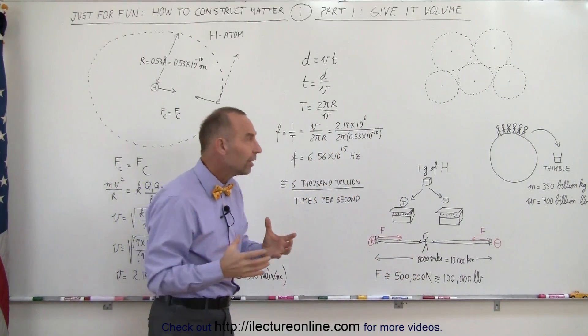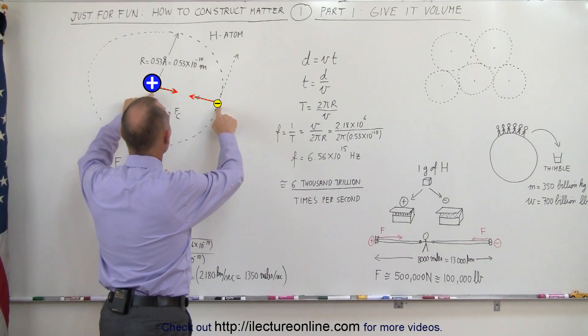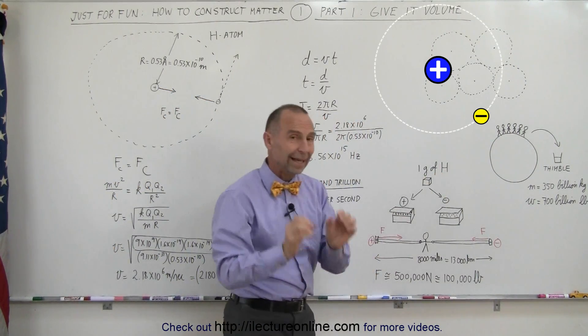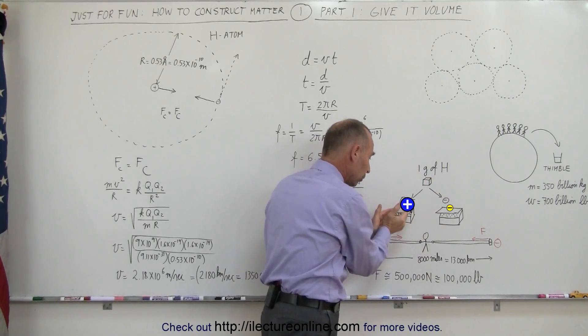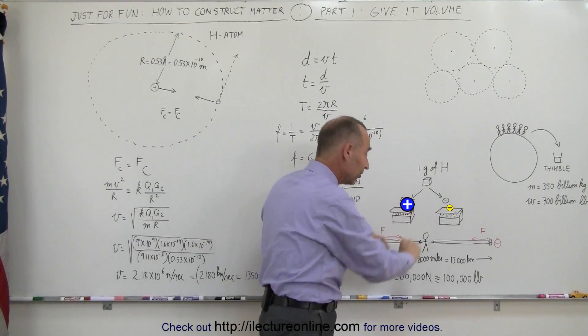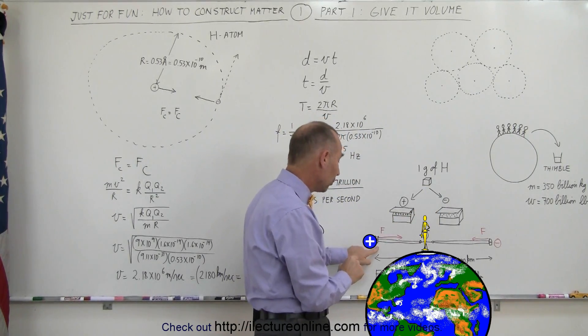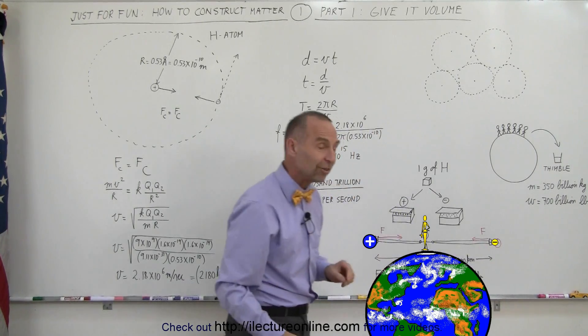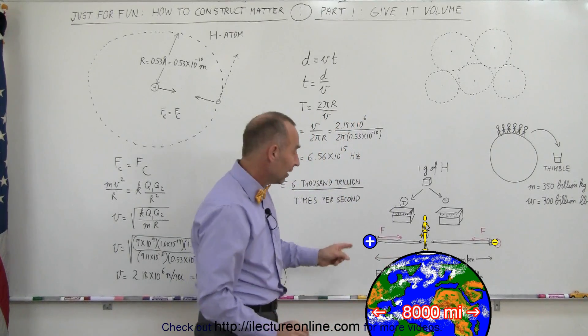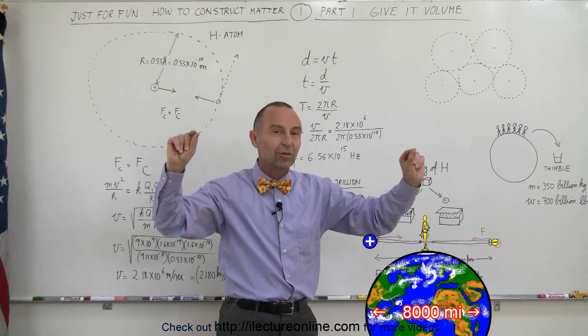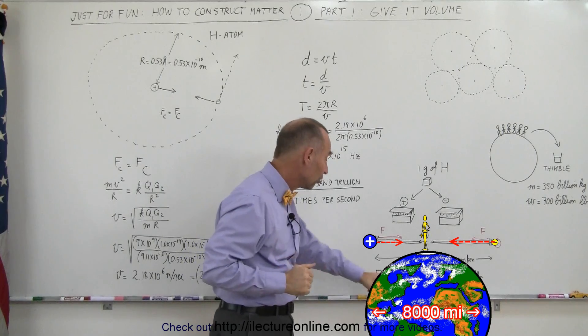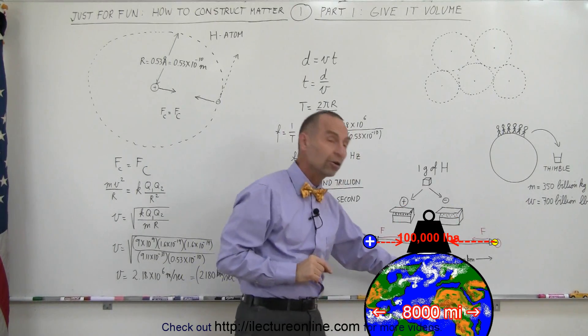In order to accomplish that, you have to have forces between those two objects, the proton and the electron, that is absolutely enormous. For example, if we took one gram of hydrogen and separate the protons and the electrons, you put all the protons in one little box and all the electrons in the other box, and one gram of hydrogen isn't very much, and then you close the lids of the box, you tie it up really tight, and you put one box on one side and the electrons in the box on the other side, that would span the entire diameter of the Earth, 8,000 miles. If those two little boxes containing one gram of hydrogen, protons and electrons separated, were 8,000 miles apart, the force of attraction between them would still be 500,000 newtons or 100,000 pounds.